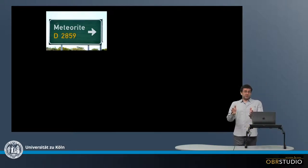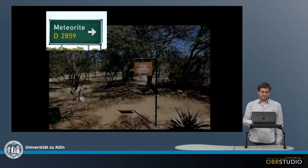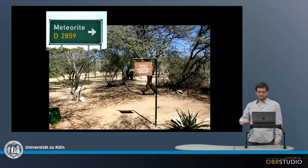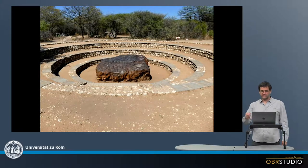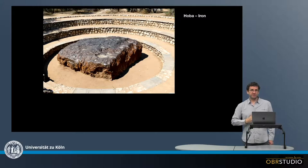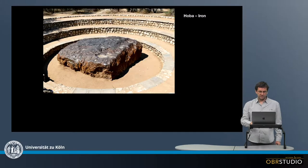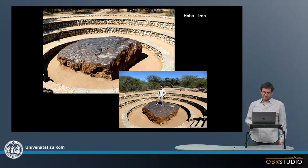And then when we go to the biggest meteorite in the world, which is in Namibia — we often have street signs directing us to this meteorite and also some sort of funny warnings here. This is the Hoba meteorite. This is also an iron meteorite. It has more than about 60 tons and they now built this little amphitheater around it because they tried to move it but it's simply too heavy. And if you need a scale, this is how big the meteorite is about.